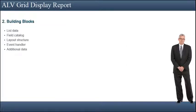While preparing a list to be displayed via an ALV grid control, we have some basic components to prepare. These are: list data, field catalog, layout structure, event handler, and additional data.